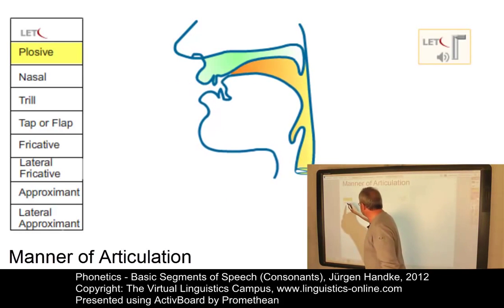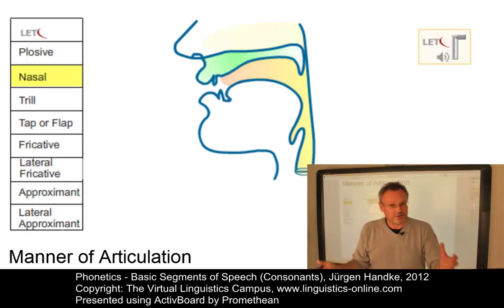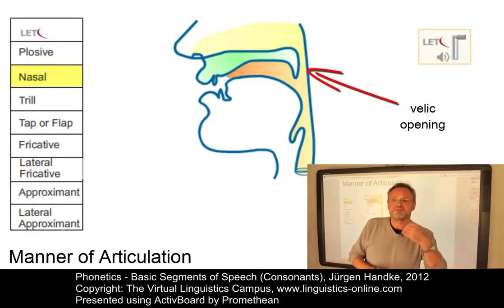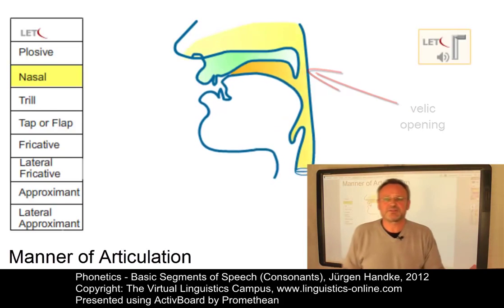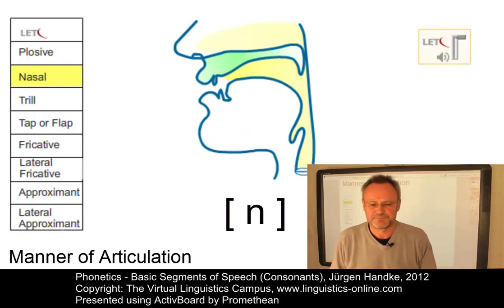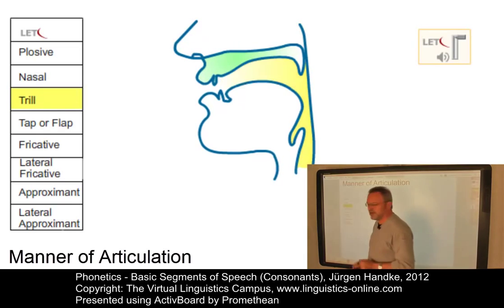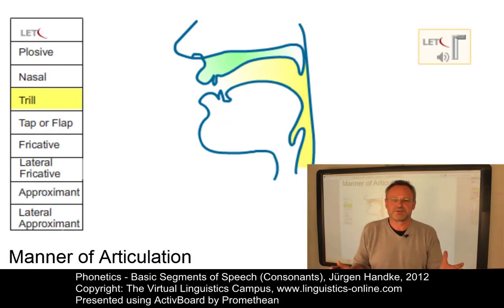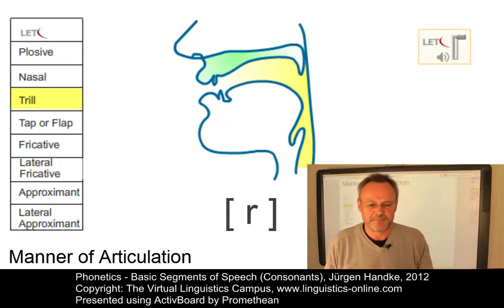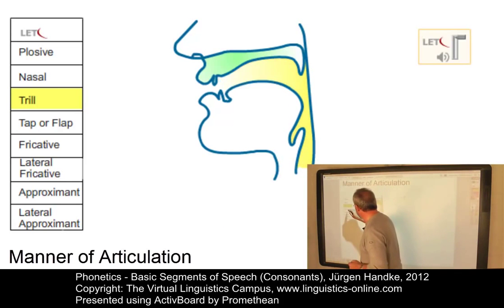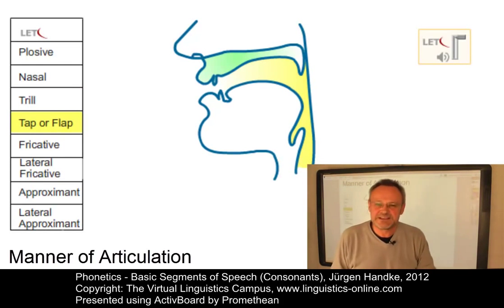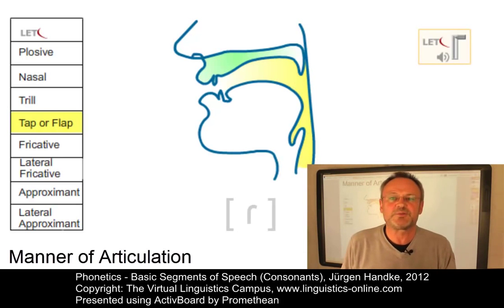In nasal consonants, we have an oral closure too, but this time we have a velic opening, allowing the airstream to escape through the nose. The result would be a-na. Trills involve rapid closures and openings — a-ra. Flaps also involve openings and closures; however, this time we only have one single rapid opening and closure — a-ra.